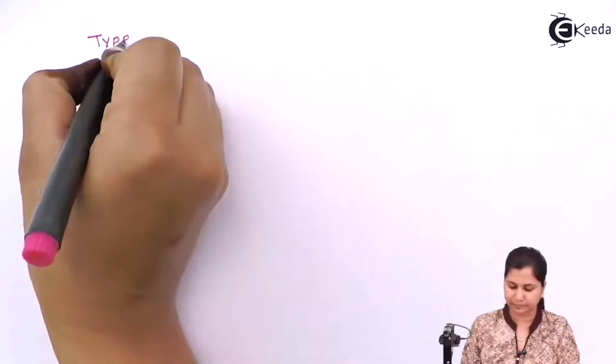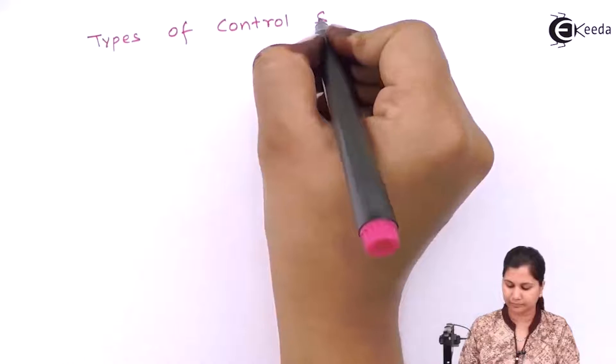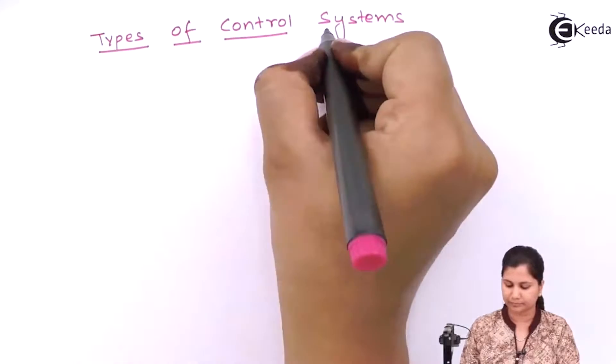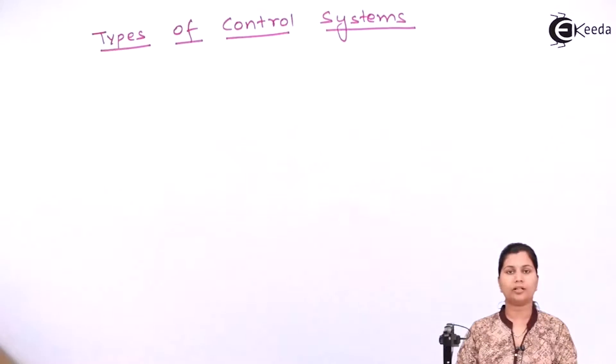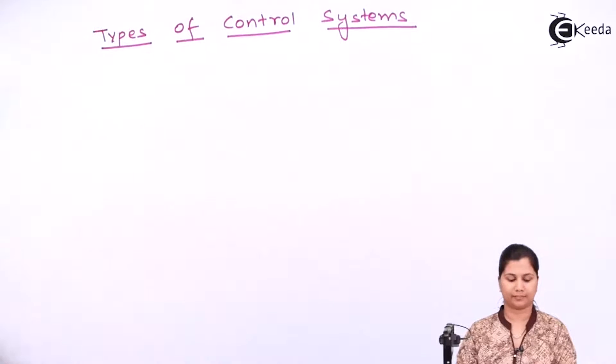Hello friends, in this video we are going to study about the types of control systems. There are two types of control systems: open loop control systems and closed loop control systems.